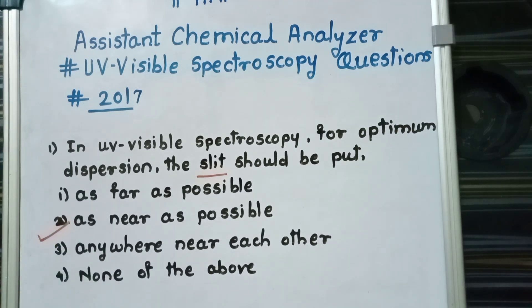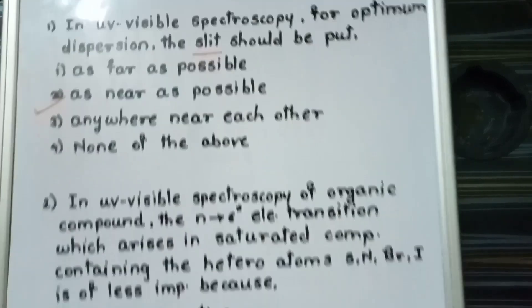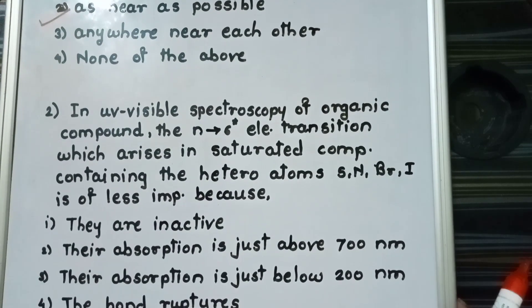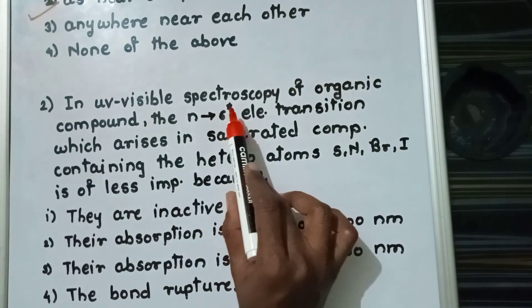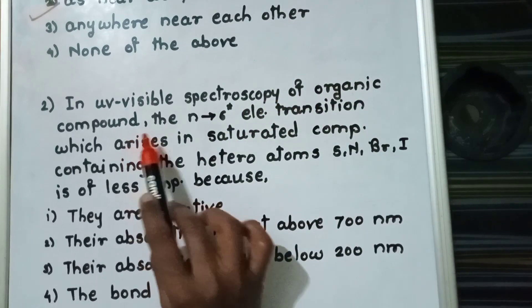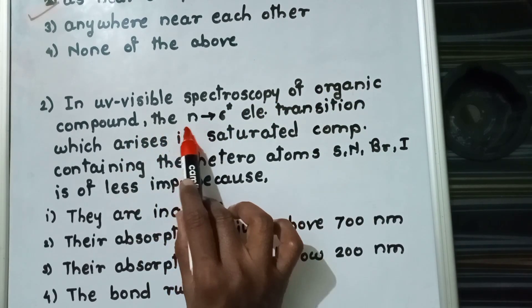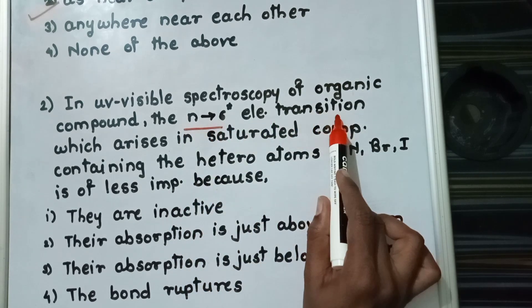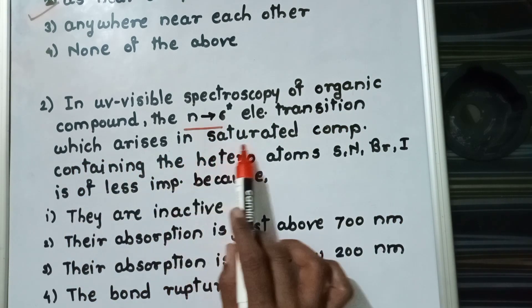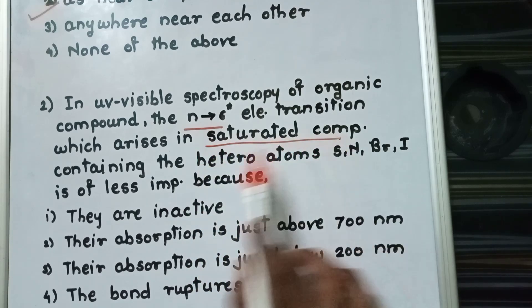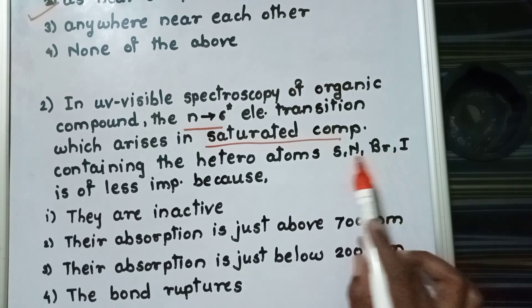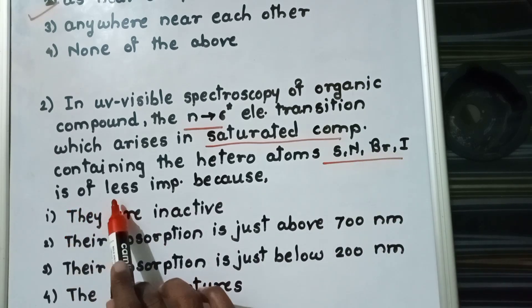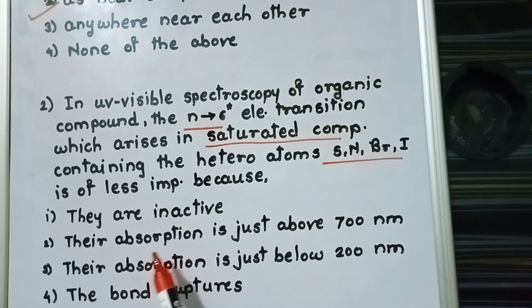Second question in 2017 examination: in UV-visible spectroscopy of organic compound, the n to sigma star electronic transition which arises in saturated compound containing hetero atoms S, N, Br, and I is of less important because...